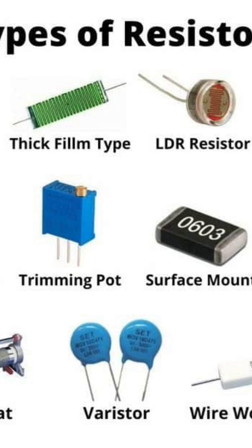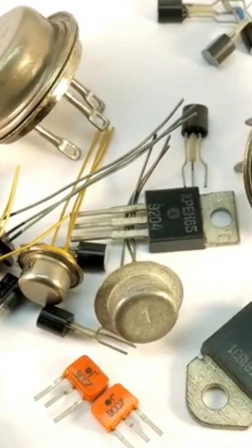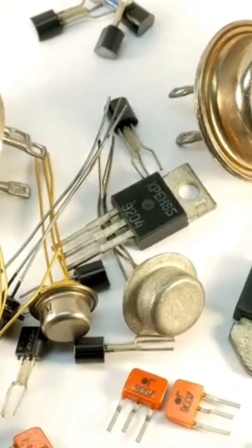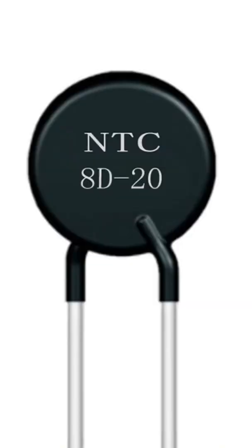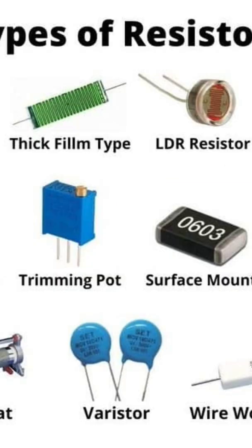There are several types of resistors. Fixed resistors have a constant resistance value and are the most commonly used. Variable resistors, such as potentiometers and rheostats, allow adjustment of resistance. Special resistors include thermistors, whose resistance changes with temperature; LDRs or photoresistors, whose resistance changes with light; and varistors, used for surge protection.